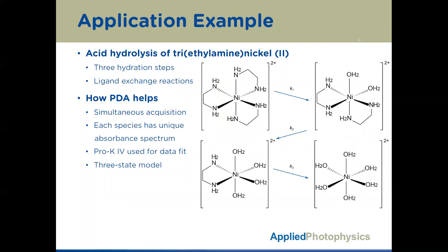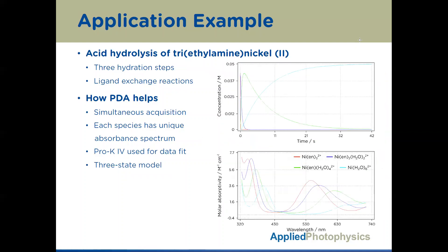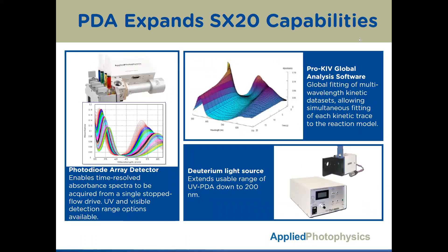I'd like to discuss a particular experimental example that makes use of both PDA for data acquisition and our PRO-K4 software for analysis. This is the reaction of acid hydrolysis of triethylamine nickel 2. In this example, PDA was used to simultaneously acquire multiple absorbance traces, as you can see on the graph, which is crucial for this reaction because each molecular species has a unique absorbance profile, as shown. And because this is not just a simple A to B reaction, PRO-K4 was used specifically to fit the data to a three-state model. Overall, the photodiode array detector enables researchers to acquire time-resolved absorbance spectra from a single stop-flow drive, which dramatically minimizes sample consumption — versus repeating the same experiment at multiple individual wavelengths.